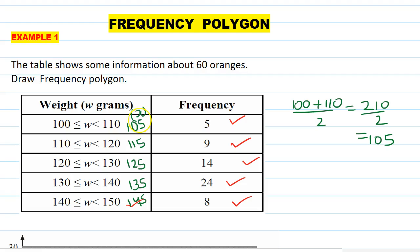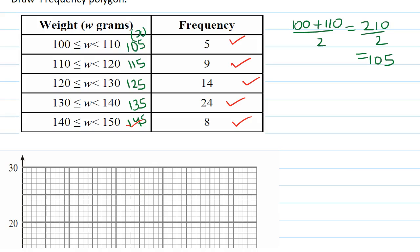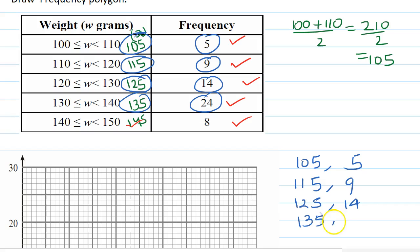Now you need to put this information into the frequency polygon. The first data point is midpoint 105 and frequency 5. Next is 115 and frequency 9. Then 125 and 14. Then 135 and 24. And the last value is 145 and 8. So let's plot this frequency polygon on the graph.